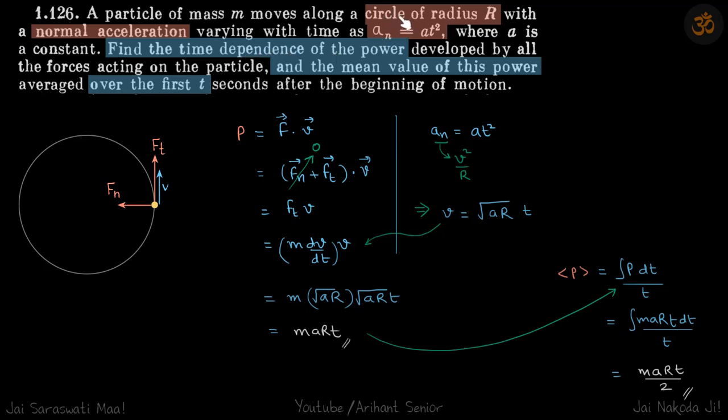A particle is travelling in a circle of radius r. Its normal acceleration is given as a*t^2. We need to find instantaneous power and mean value of this power over the first t seconds.